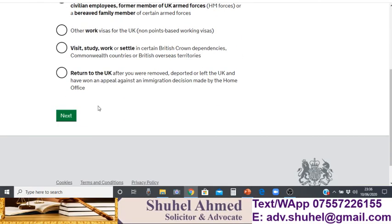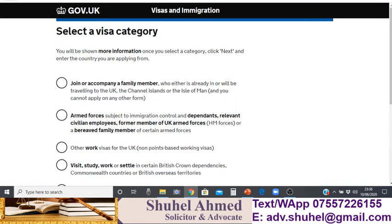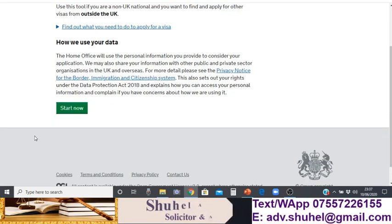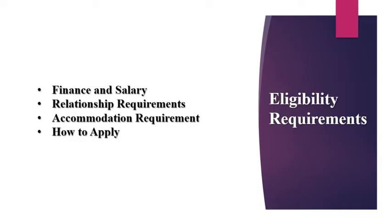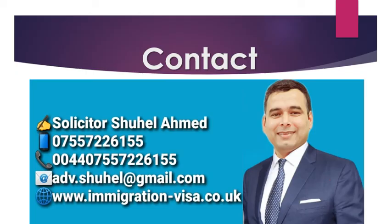In the portal, you need to fill in all the sections from section one to section six. In the final section you will be required to pay the Home Office fee, and then you'll make an appointment with the Home Office visa application centre or with the embassy. At the embassy you will provide your details and all the evidence required.